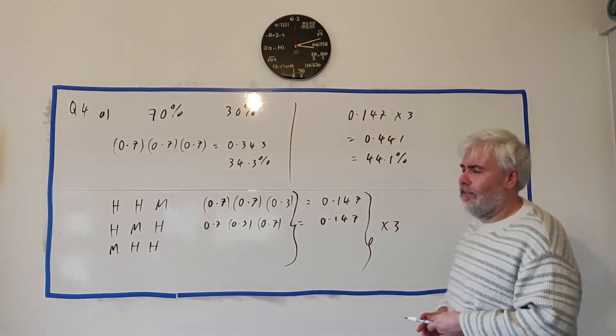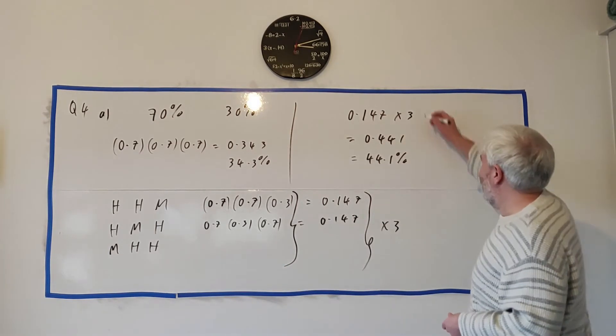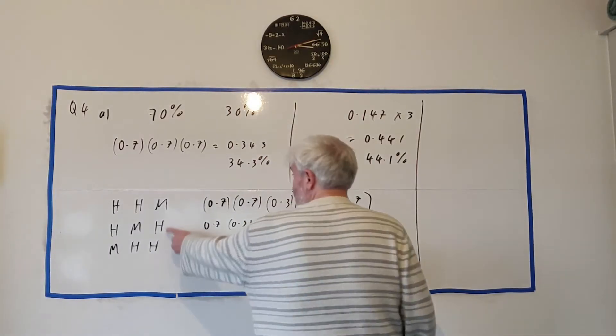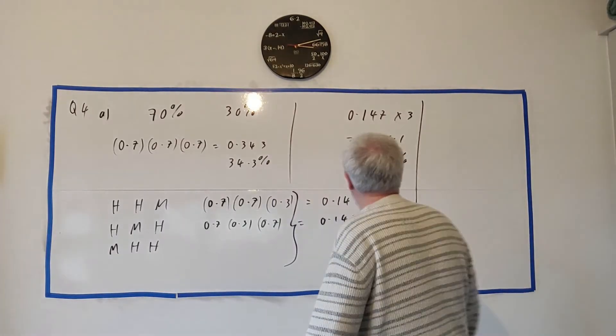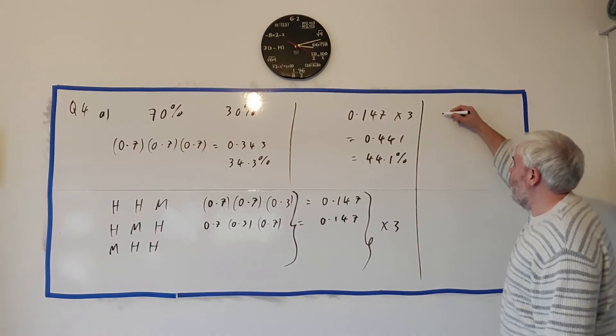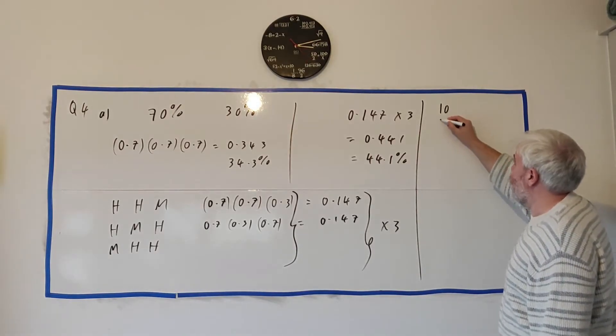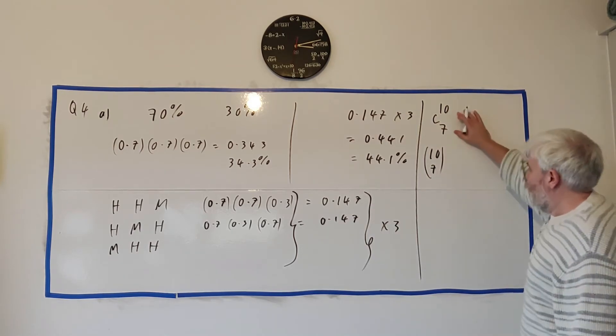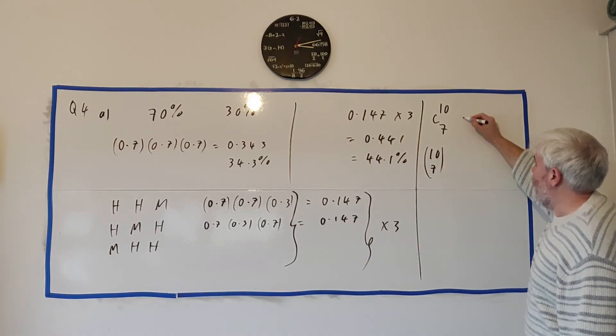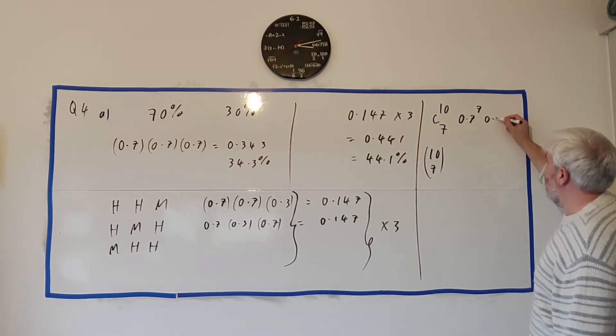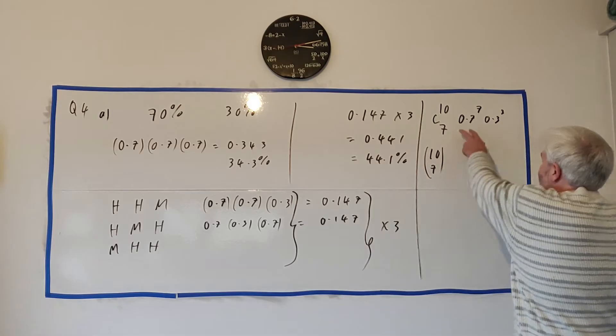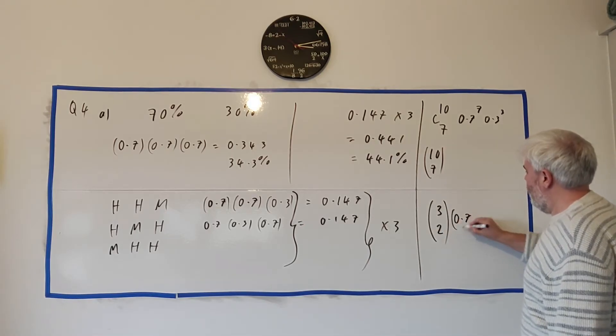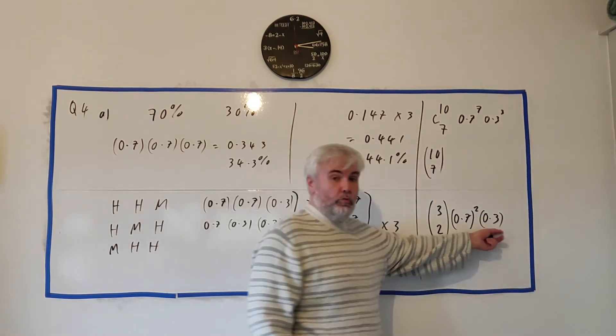There's a more complicated way to do this that in the ordinary level, they'll probably never ask. But they could have asked in this question, what's the chances of him making 7 out of 10 shots? And you cannot by hand work out how many that would be. So there's a thing in your calculator, choose. So what did I say? 7 out of 10. That's 10 choose 7. So the probability of him making 7 of them would be 0.7 to the power of 7. The probability of him missing three, 0.3 to the power of 3.